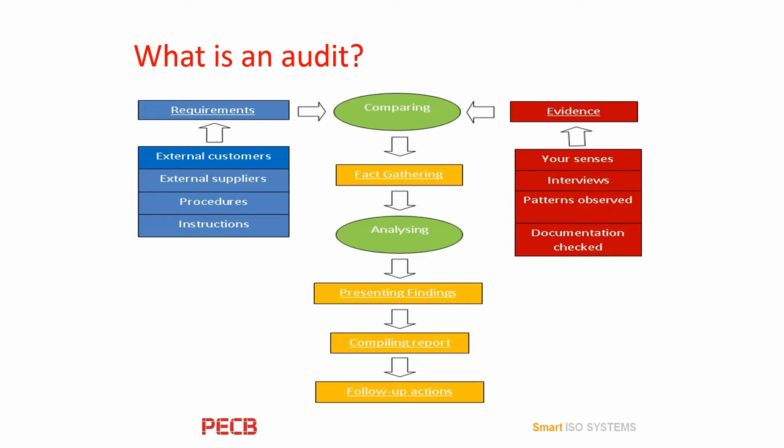Another way is a new manager deliberately circumventing the quality management system or any other standard that you're auditing and imposing his own ideas on everybody. The second way nonconformances happen is a leading nonconformance. This happens when a better way of doing the job has been found — their practice is in advance of the documented procedure. The problem is either the person does not know how to ask for a change or is just lazy and can't be bothered.